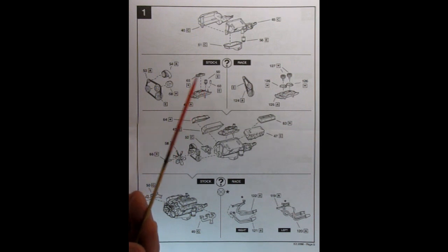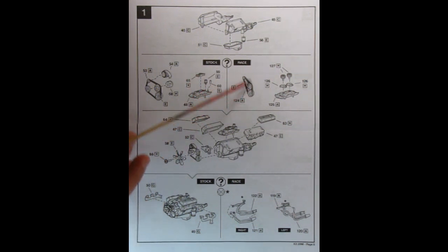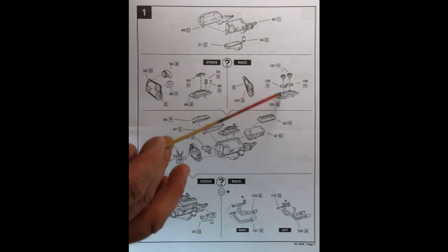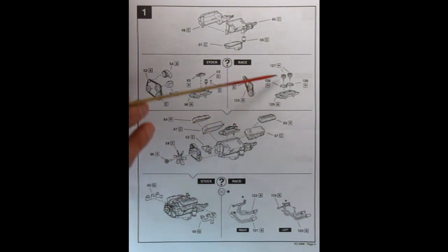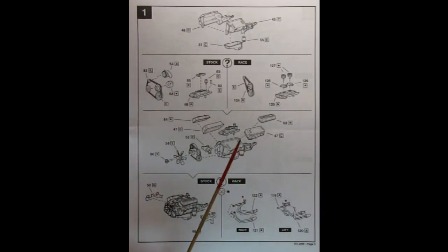Over on the race side we get our belts and pulleys here. We also get a dual carburetor intake manifold with our dual carburetors and our air cleaners. Then we get into more of the engine build. Here we get to drop on our intake assembly onto the block as well as the water pump,